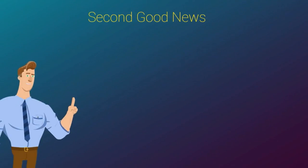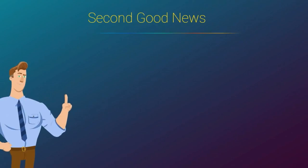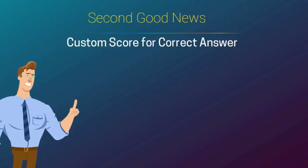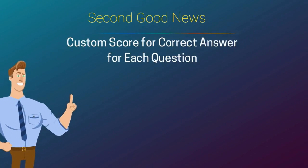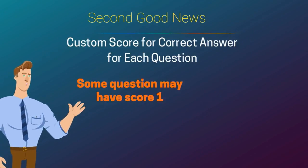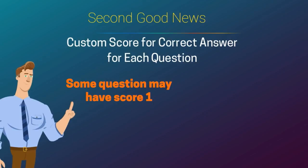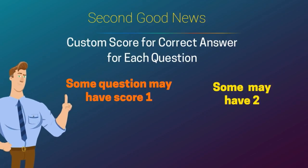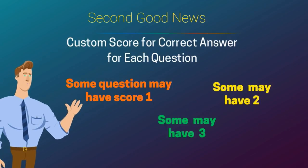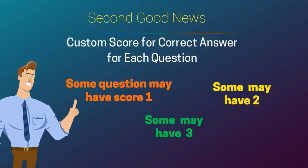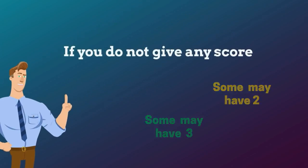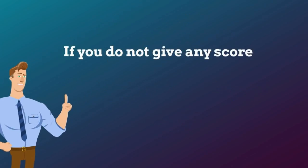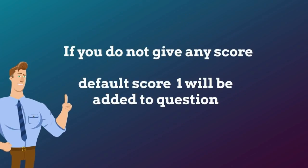Second good news. Now you can give a custom score for a correct answer for each question. So some questions may have score one, some may have two, or some may have three, as you wish. If you do not give any score, a default score of one will be added to the question automatically.